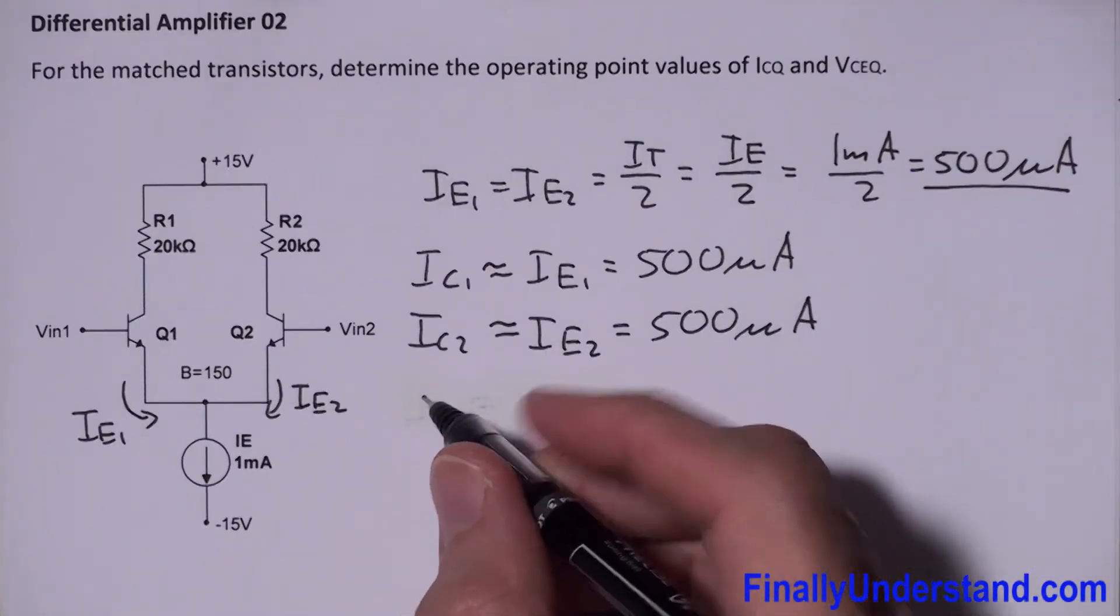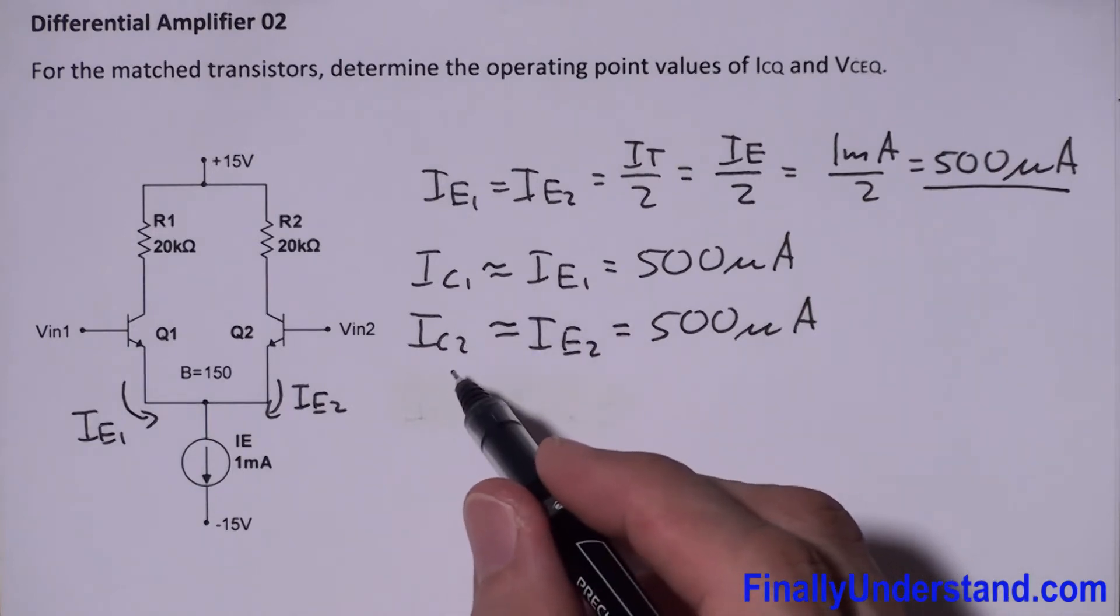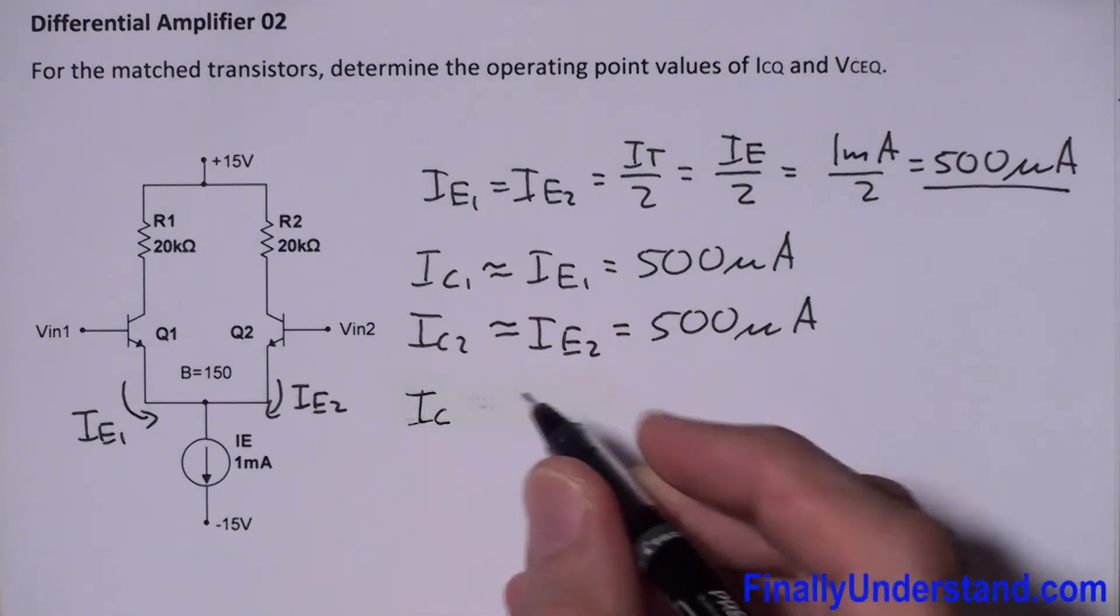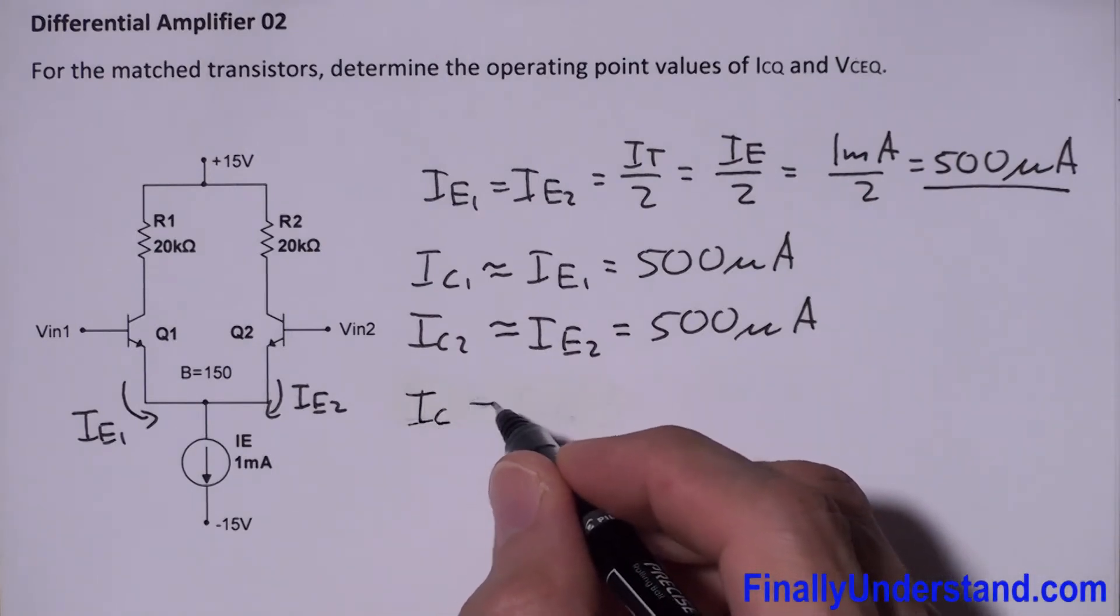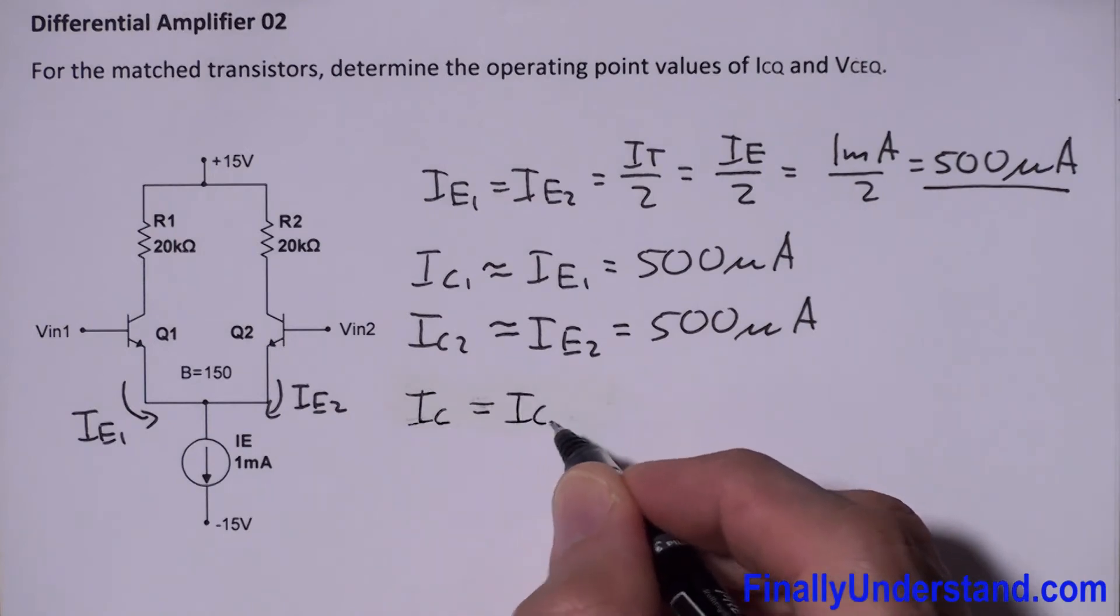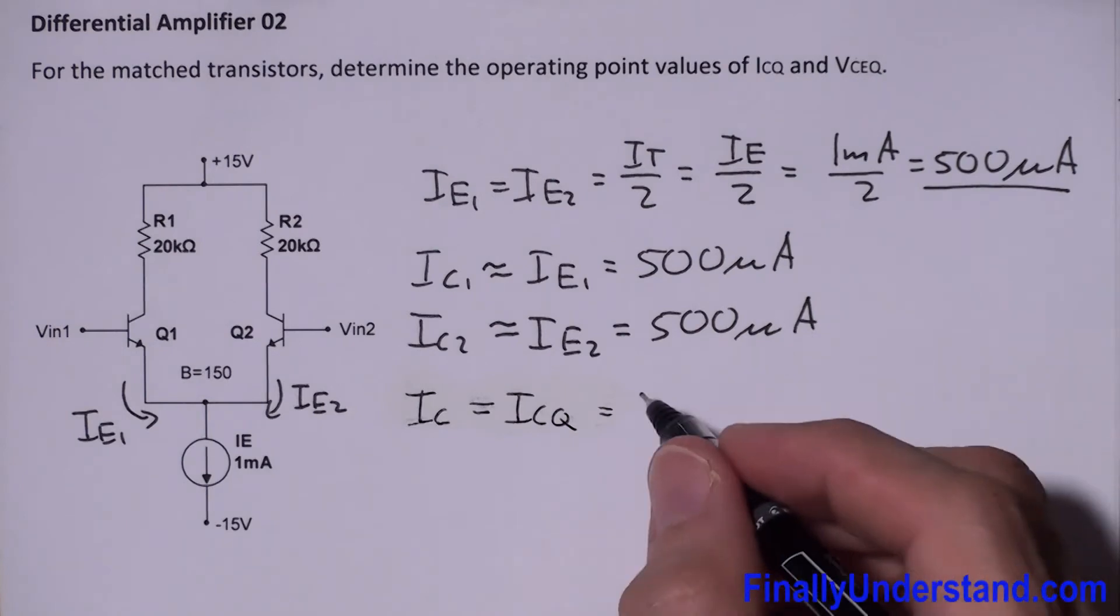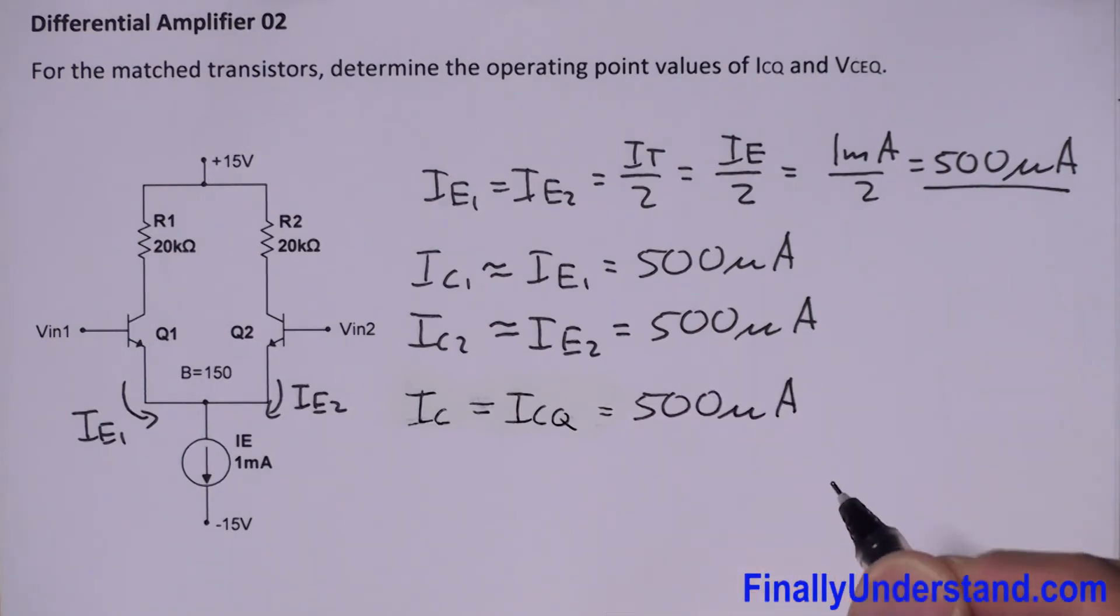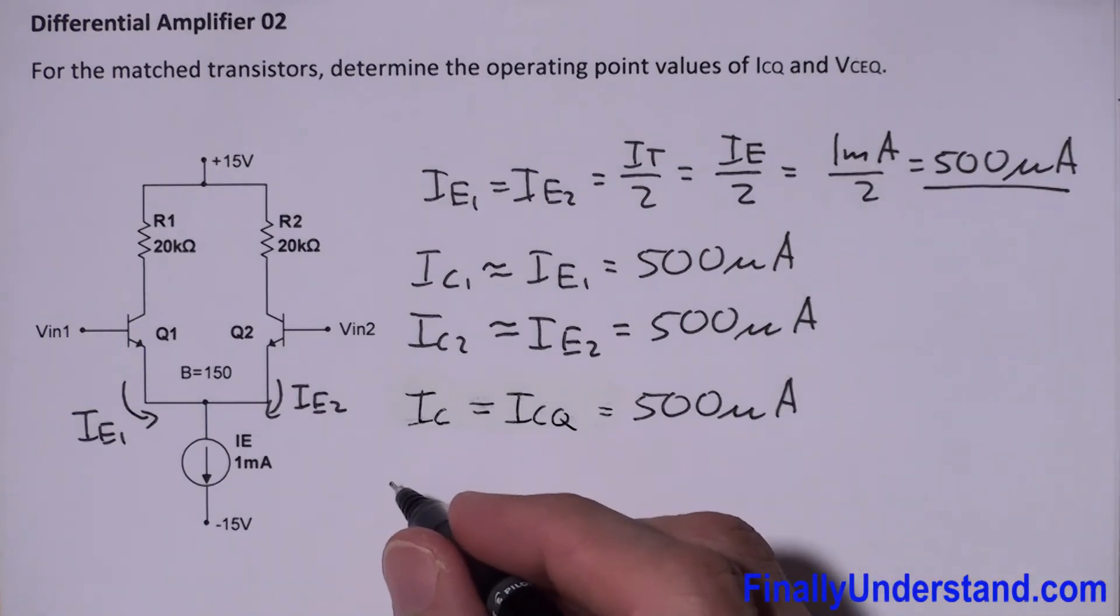Anytime we say IC1 or IC2, I mean current IC. So anytime I say IC, this is equal to ICQ. So in our case, ICQ is equal to 500 microamps. Next we're supposed to find VCEQ.